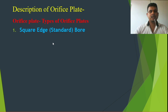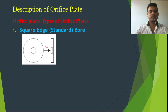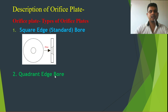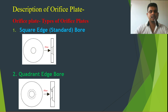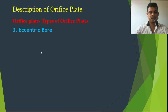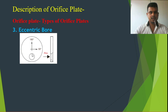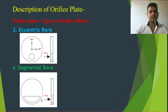The square edge bore, also called the standard bore, has the bore at the center of the orifice plate. The quadrant bore has a tapered entry. The eccentric bore is offset from the center to one side. The segmental bore is a segment of a circle. Each different type of bore has a different purpose of use.